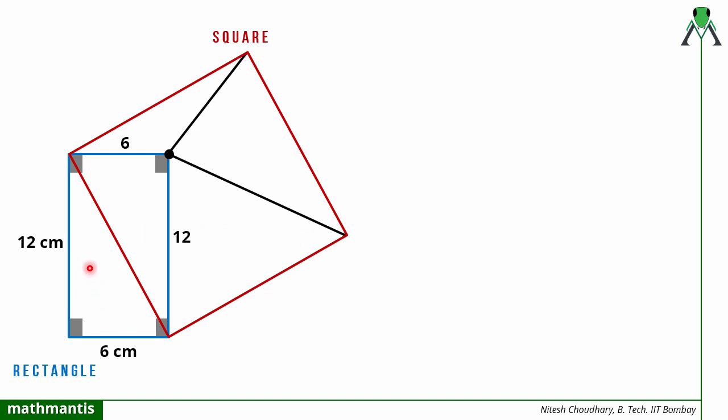Now I can see that one side of the square is nothing but the diagonal of the rectangle. So first I will find this side by using Pythagoras theorem in this triangle. So let me assume this side to be x.